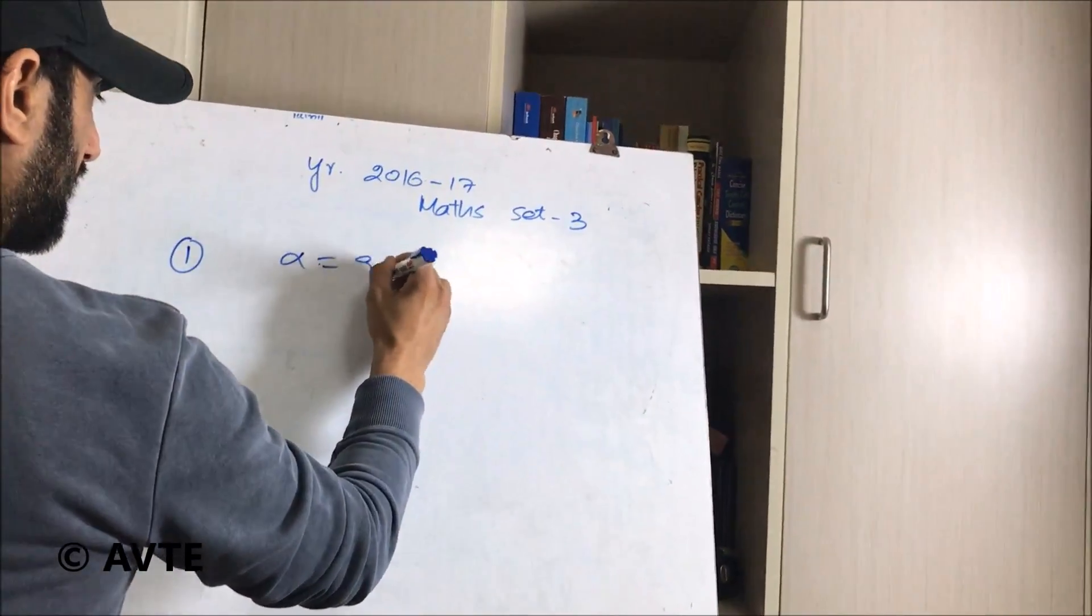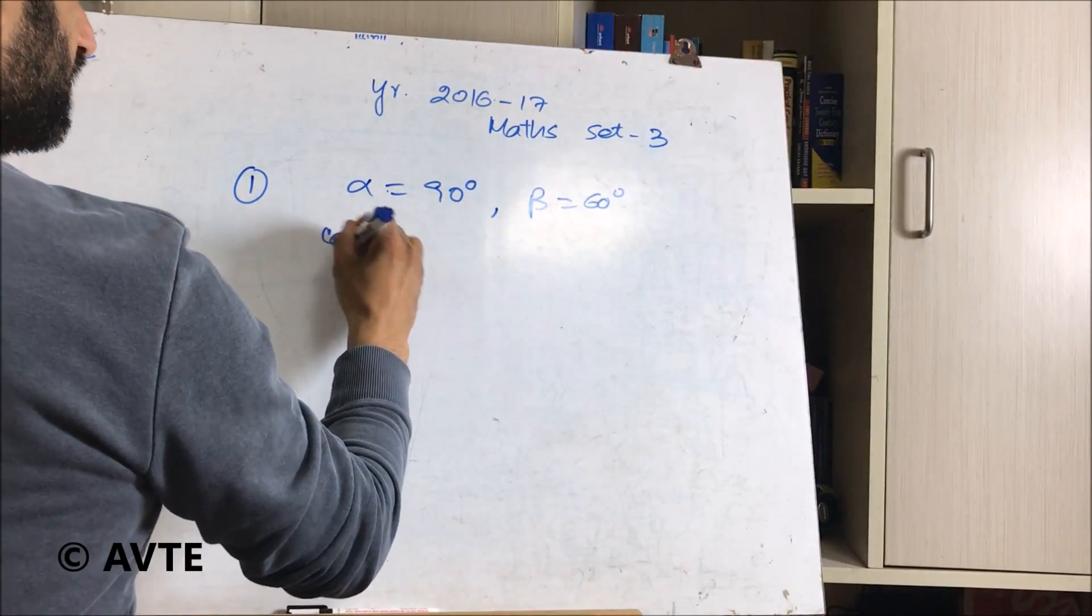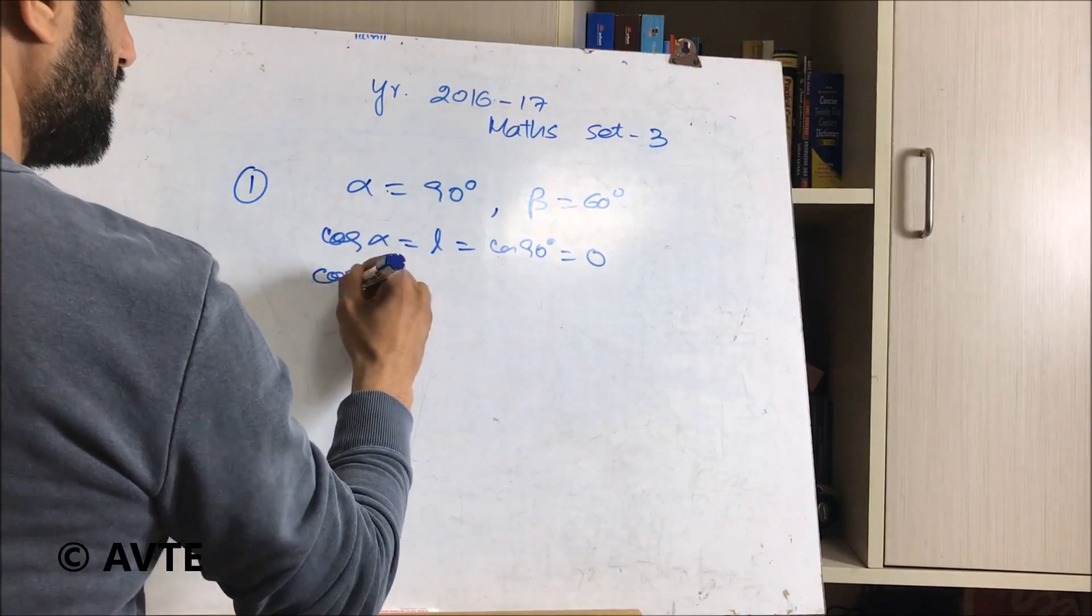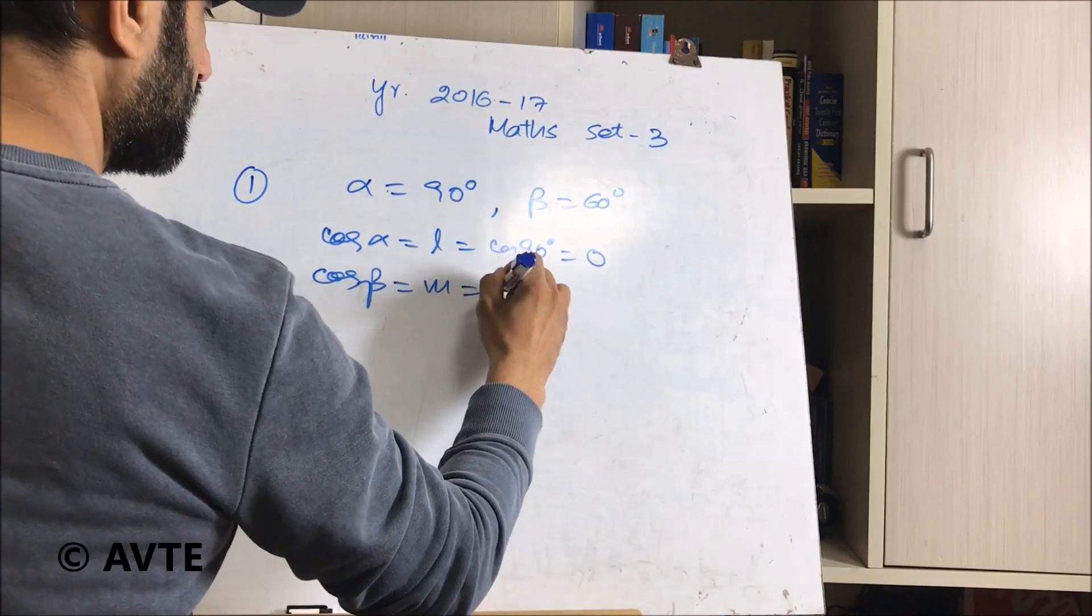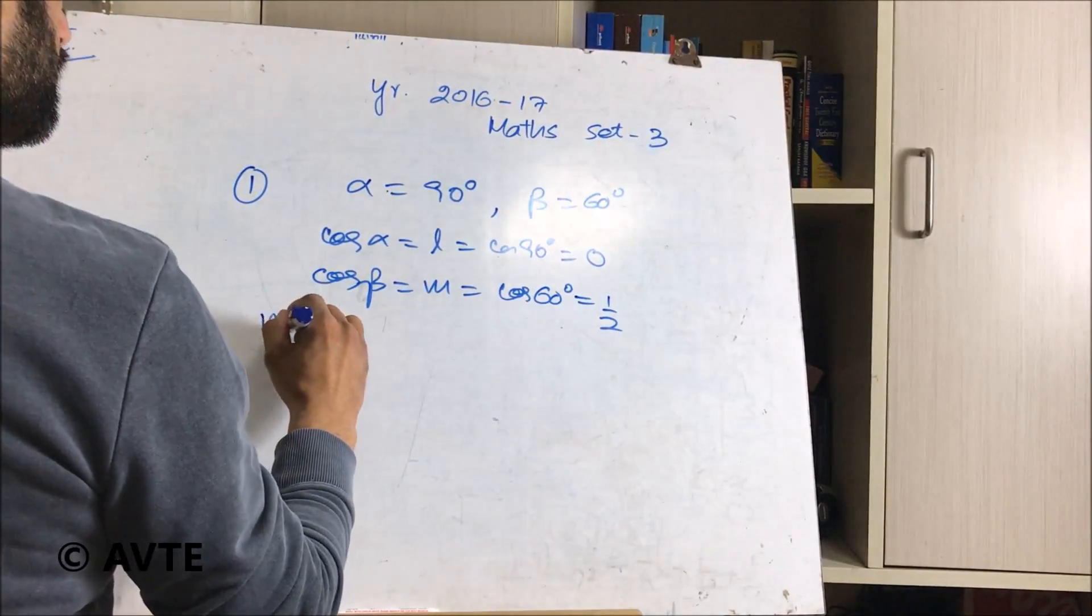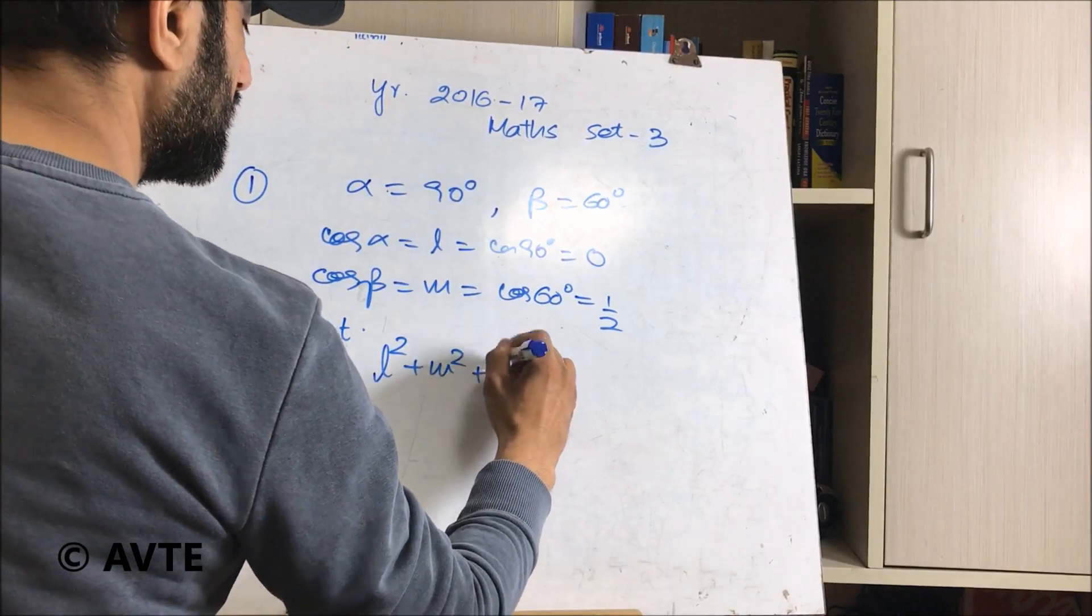So alpha is 90 degrees, beta is 60 degrees. So cos alpha which is equal to L is cos 90 which is 0. Cos beta which is equal to M is cos 60 degrees which is equal to 1 by 2, and we all know that L square plus M square plus N square is equal to 1.